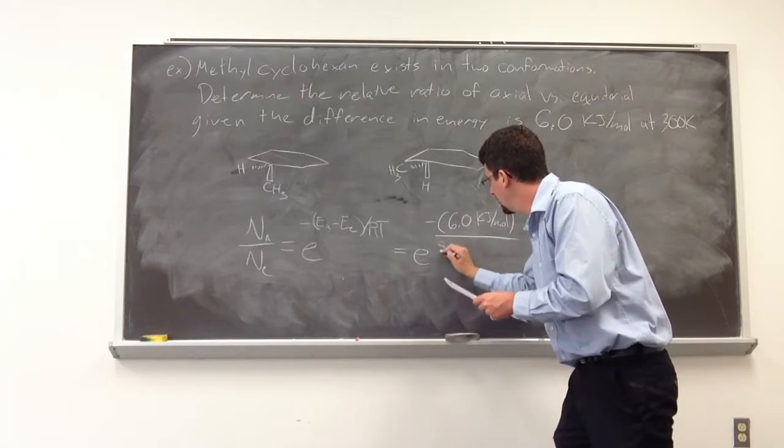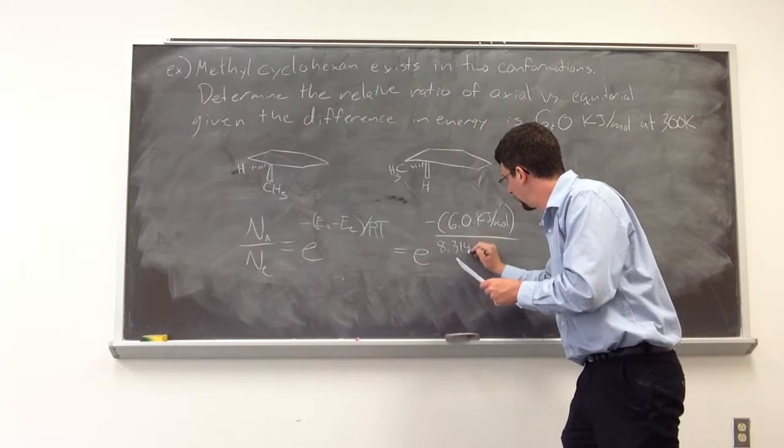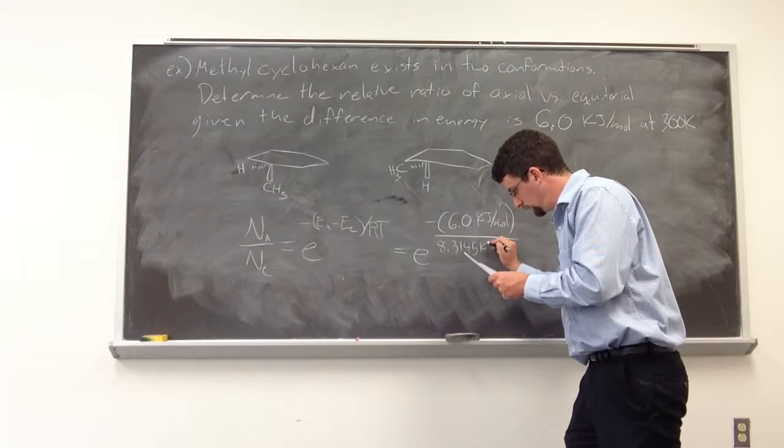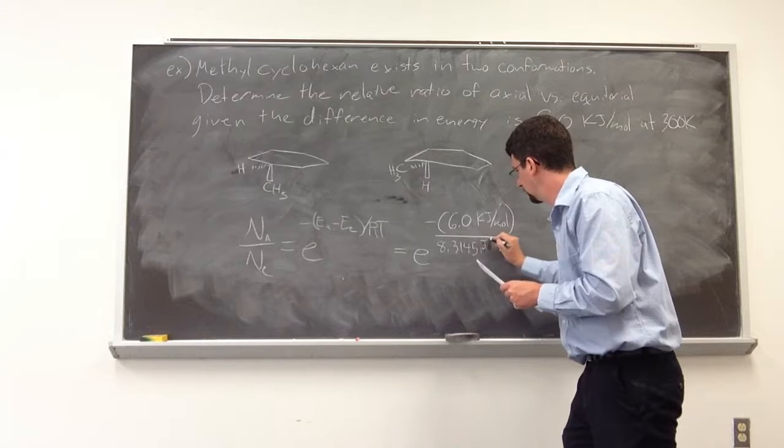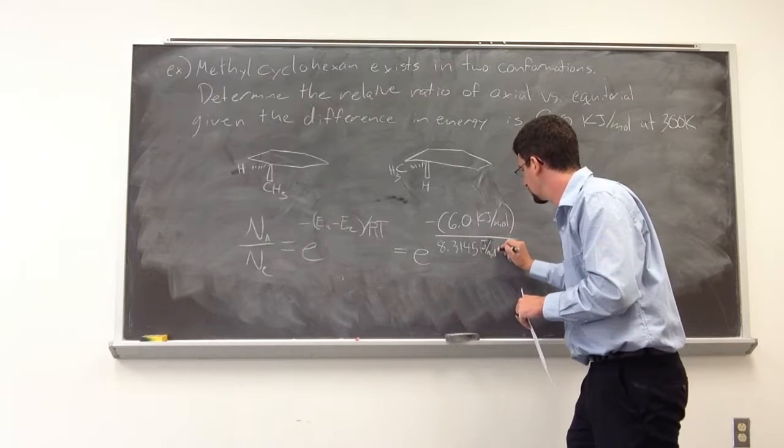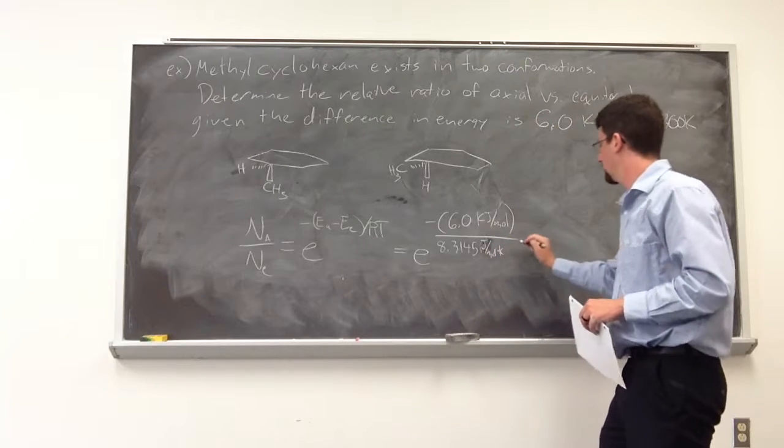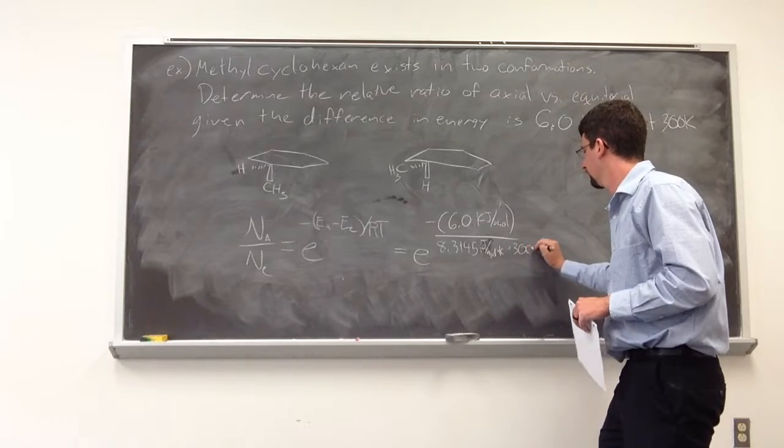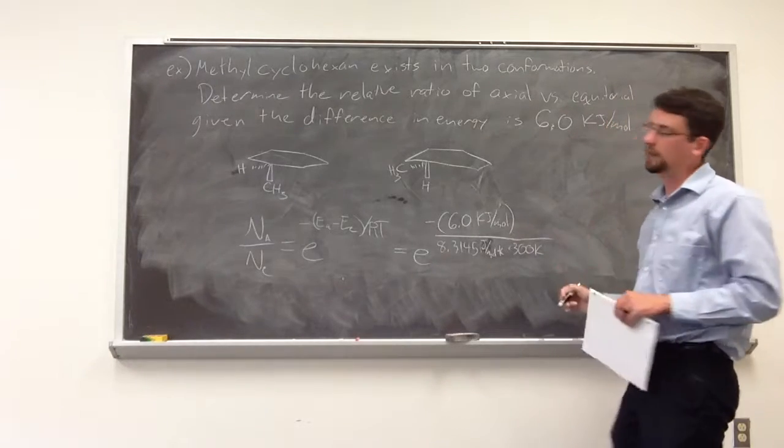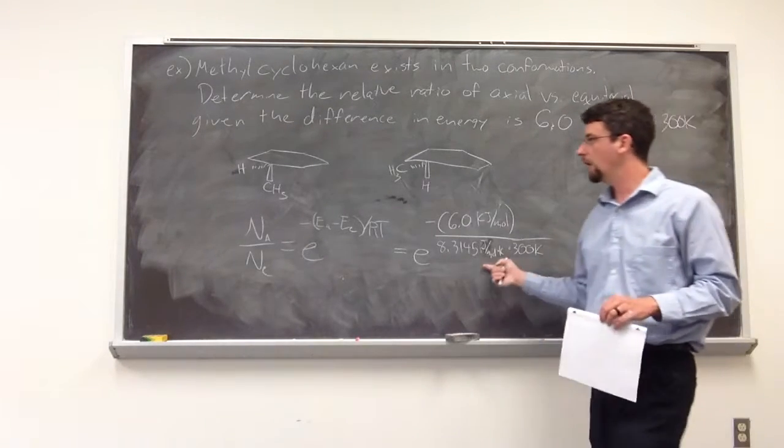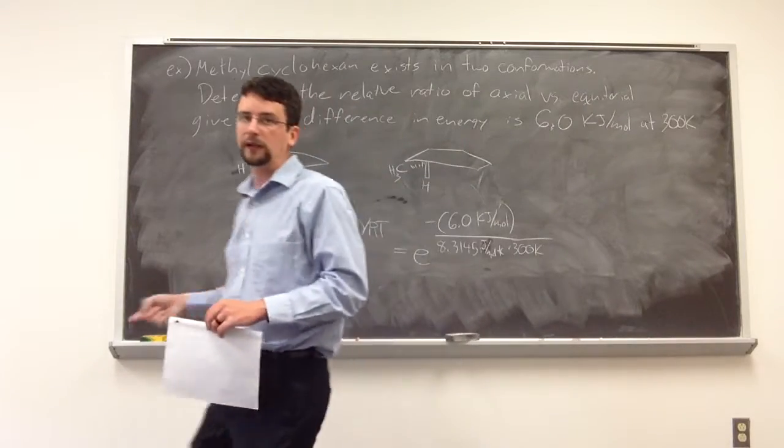So we have E is equal to negative 6.0 kilojoules per mole divided by R. So we can look up an R value. We've got 8.3145 joules per mole times K. And then we have our temperature times 300. Now, there's a problem with what we have right here. Our units aren't going to cancel out. Overall, this should be unitless.